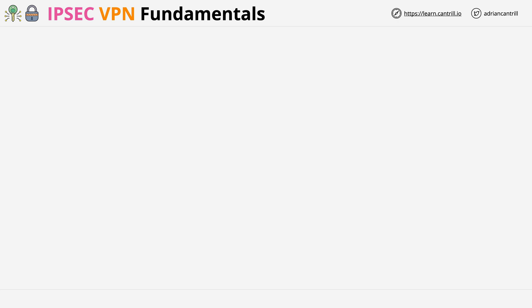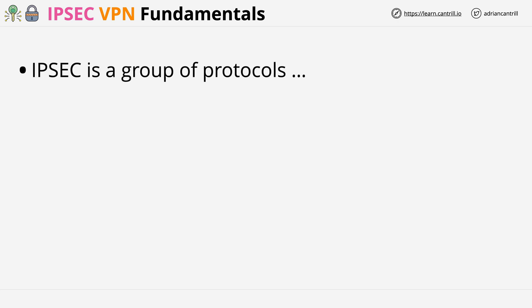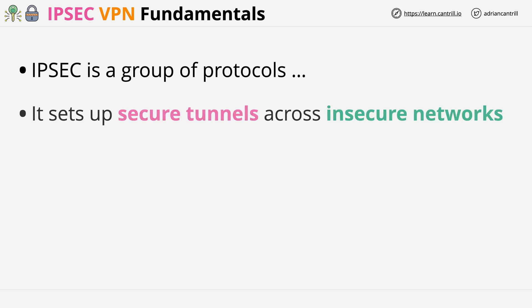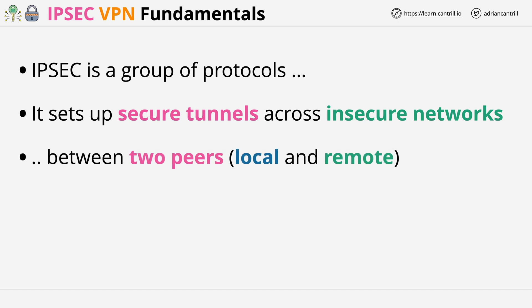At a foundational level, IPsec is a group of protocols which work together. Their aim is to set up secure networking tunnels across insecure networks. For example, connecting two secure networks — or more specifically, their routers, called peers — across the public internet.